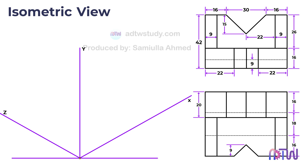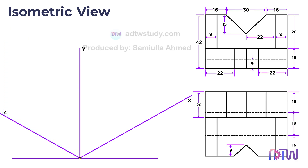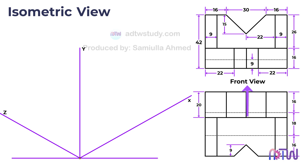With these three isometric axes in place, we can now construct the isometric view of the object. We need to decide whether to draw the front view in the XY plane or the YZ plane. The front view should only be drawn in these two planes and never in the XZ plane. The top view of the object is always drawn in the XZ plane. In this video we will be utilizing the first angle method to solve the problem. The figure on top is the front view and the figure on the bottom is the top view.